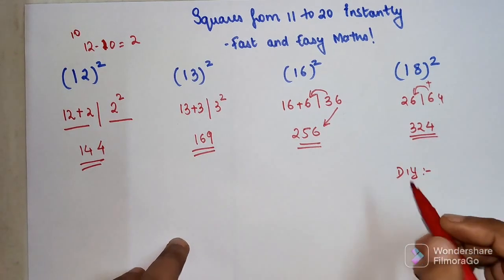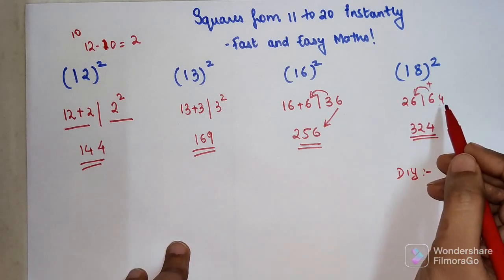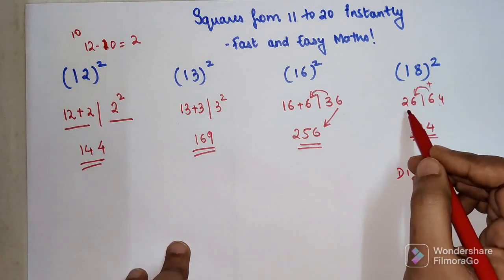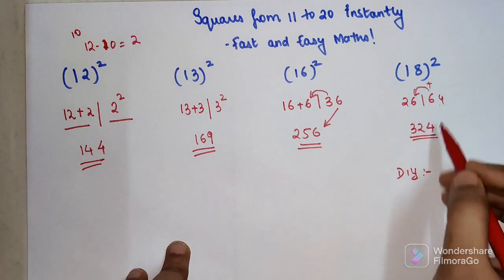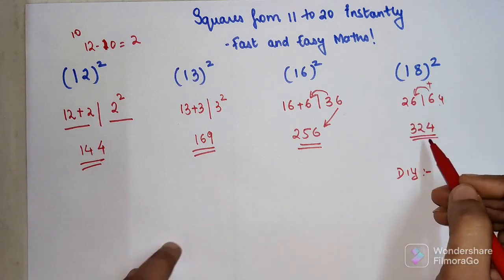So in case you have a double digit over here, you have to add the tens digit to the previous number, and the units digit will remain as is or will be part of your answer.